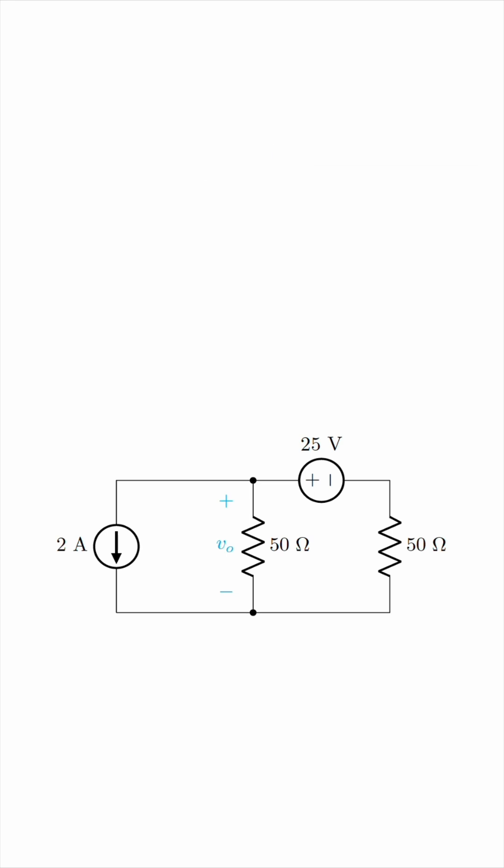Let's consider the voltage source alone by replacing the current source with an open circuit, like this. V0 is no longer V0, because now this is only one part of the solution, so let's call it V01.